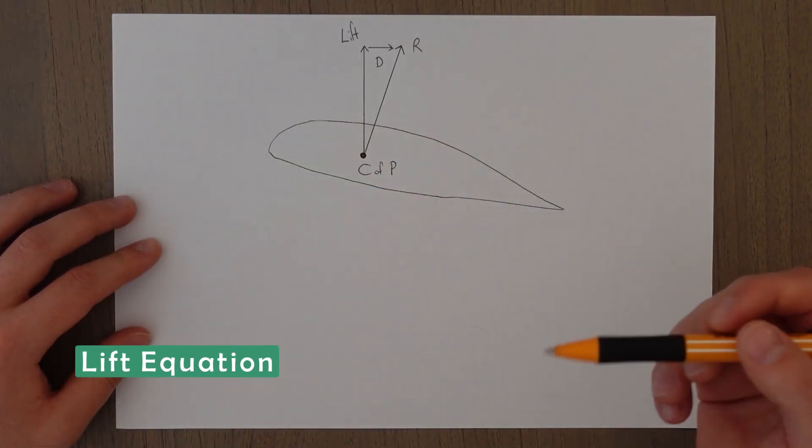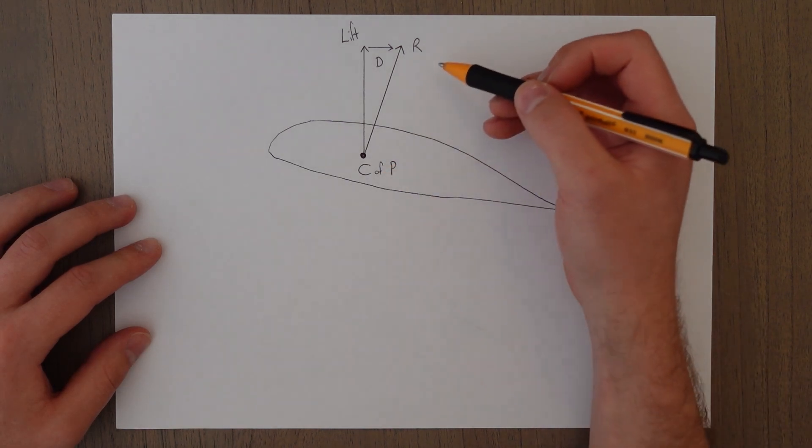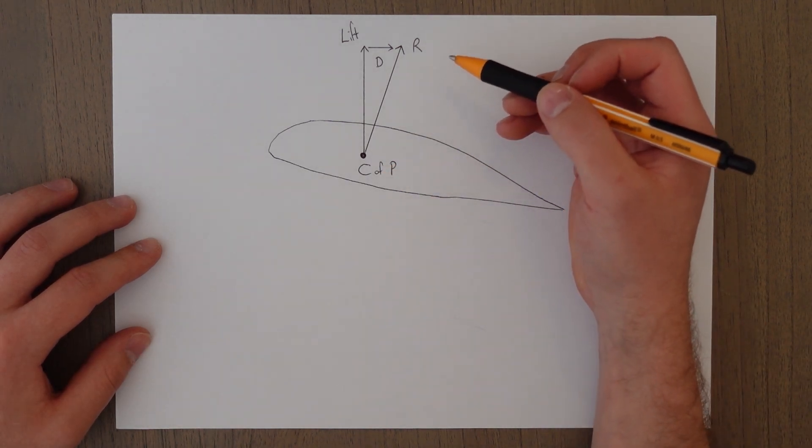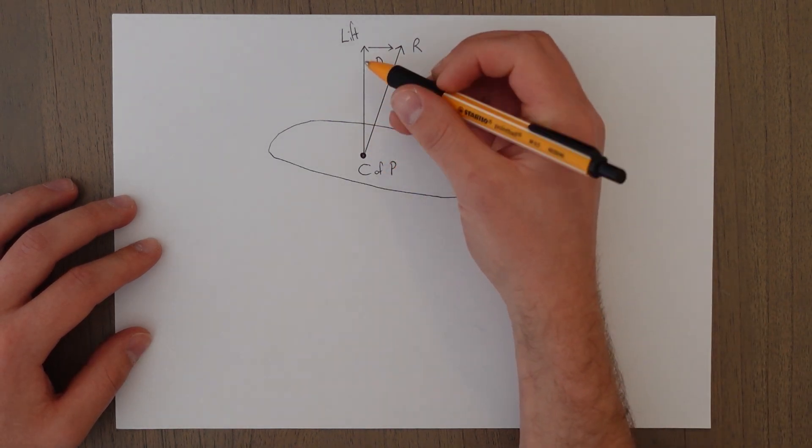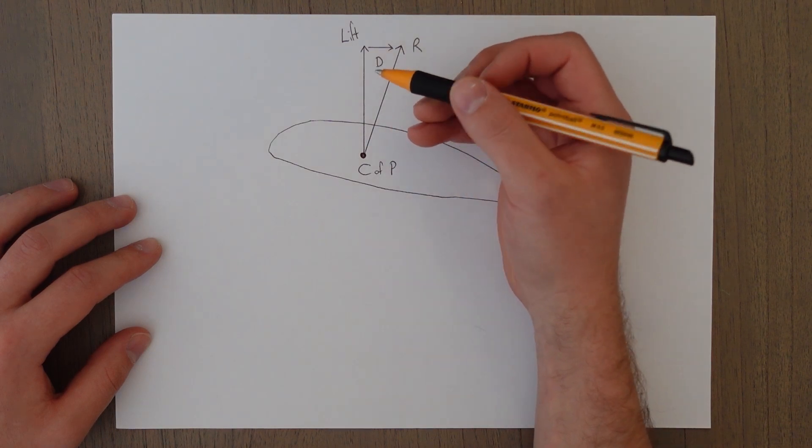Lift is the vertical component of our resultant force that we saw in the previous class. Lift acts in direct opposition to the weight of the aircraft.